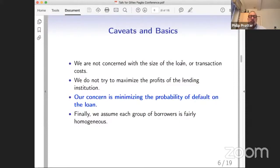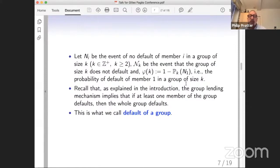To create a model, we're going to assume that within each group of borrowers, the group is fairly homogeneous. Mathematically, that means that if N_i is the event of no default of member i in a group of size k, then script N_k is the event that the group of size k does not default. And so φ(k) is the function 1 - P_k(N_1). If we assume they're all iid, that's the same as P_k(N_i) for any i. But that depends on group k - they're iid within a specific group. Not all borrowers are iid, just those in a specific group.